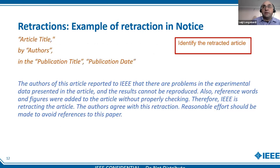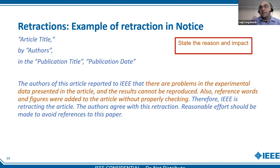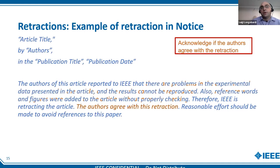Here is a brief example of a retraction notice. We make sure that the retraction identifies the retracted article, we state who is retracting the article — in this example it is the publisher IEEE — and we state the reason and the impact. In this particular case, we state that there are problems with the experimental data presented in the article such that the results cannot be reproduced, and also that the article references works and figures that were added without properly checking at the end of the process. Finally, if the authors agree with the retraction, we acknowledge that in the retraction notice.